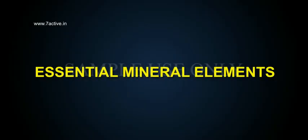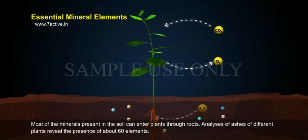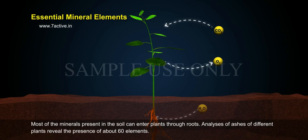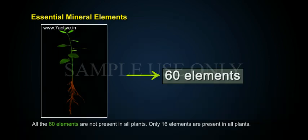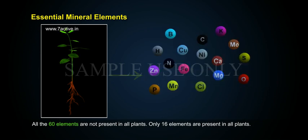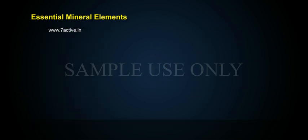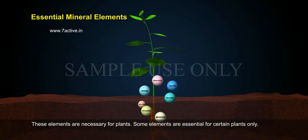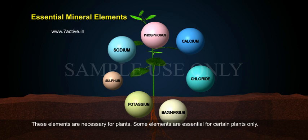Most of the minerals present in the soil can enter plants through roots. Analysis of ashes of different plants reveals the presence of about 60 elements. However, not all 60 elements are present in all plants — only 16 elements are present in all plants, and these elements are necessary for plants. Some elements are essential for certain plants only.